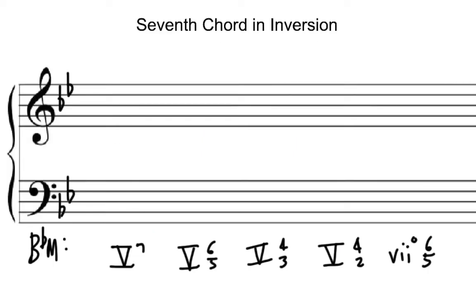We're going to continue to talk about 7th chords in inversion. The first chord listed is a root position chord — it's just labeled 7. By the way, 7, 5, 3 is actually the full version, but usually we just see 7. In the key of B flat, a dominant 7 would be spelled on F. So we're part-writing these rather than just writing them on a single staff. I'll put the root F, then the C (the 5th) in the tenor, the alto gets E flat (that's the 7th of the chord), and the soprano gets the A. That's an example of the dominant triad in root position.